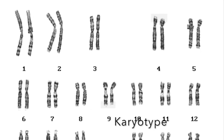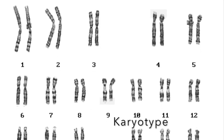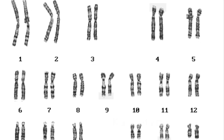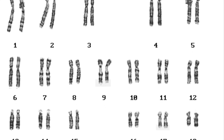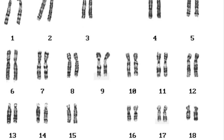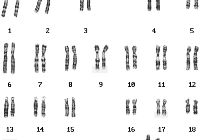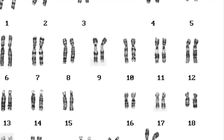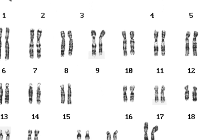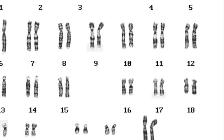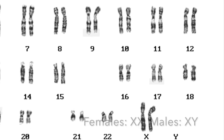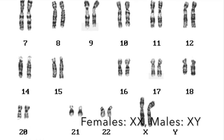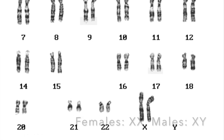22 of the chromosomes are called autosomes and look the same in males and females. They are named in order of descending size from 1 to 22. The last pair are the sex chromosomes. Males have an X and a Y chromosome, whereas females have two X chromosomes.